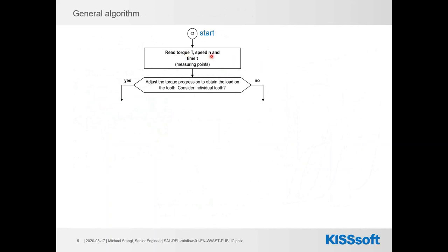The general algorithm: first we have some input data, and we have to decide whether we want the input data as a general spectrum for the whole machine or whether we want to look at single teeth. This distinction is important — for example, if you have a machine that always starts from the same position, like fine mechanics machines turning around 90 degrees and going back, it's very important to get the tooth from the load spectrum that has the highest torque. But for a car, an average is more appropriate.